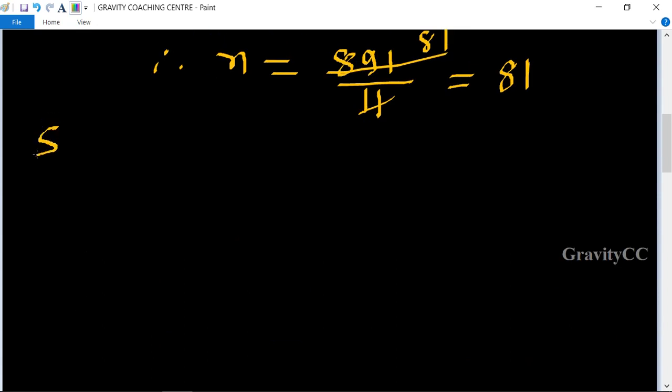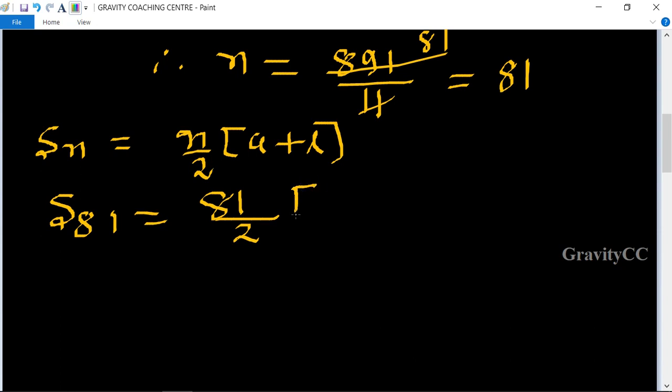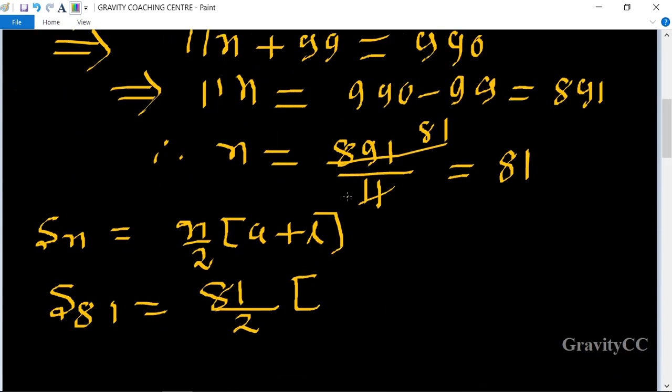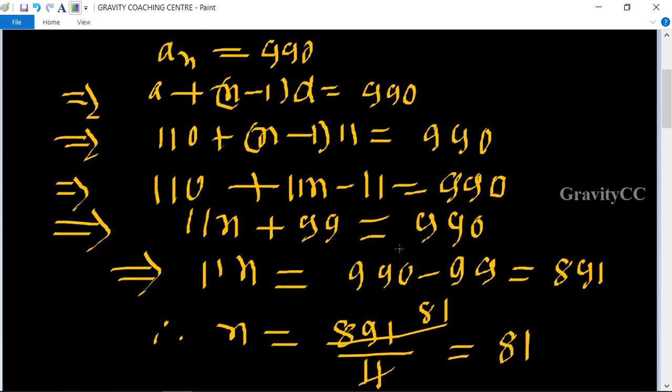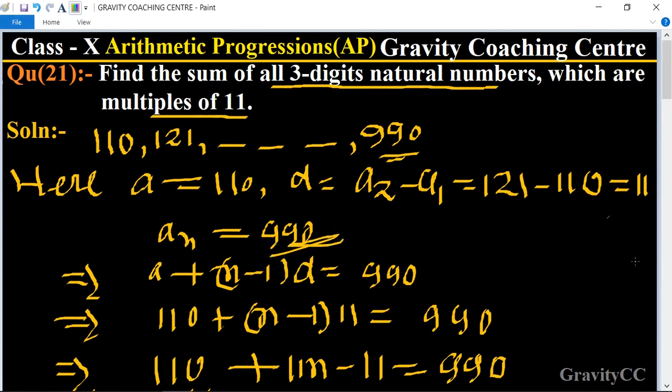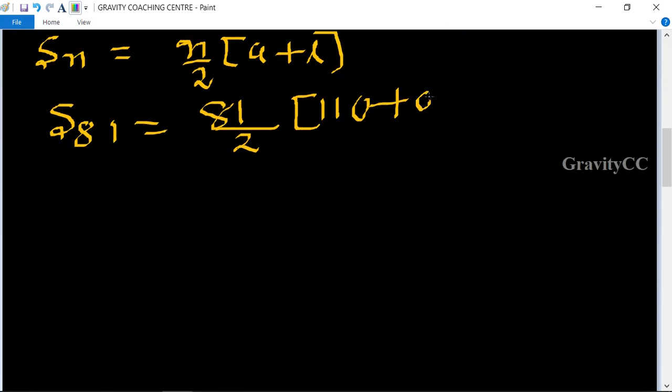So to find their sum, we know that the formula of Sn equals n by 2 times a plus l. The value of n is 81, so Sn equals 81 by 2 times, and a equals 110 plus the last term is 990.